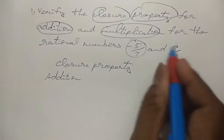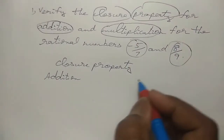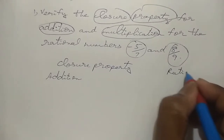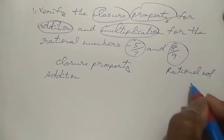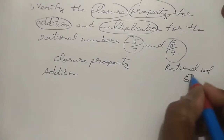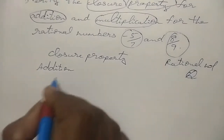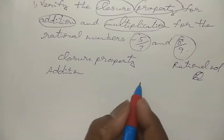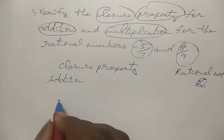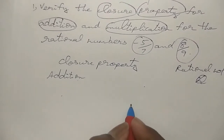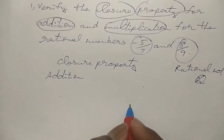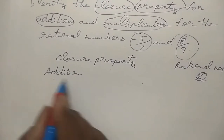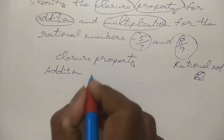Since both the numbers are rational numbers — rational numbers means it is a fraction — we represent rational numbers by Q. If you add also, you have to get the answer as a fraction. If you multiply also, you have to get the answer as a fraction, so it is a rational number. We can prove it is the closure property. First, what is the condition for addition?